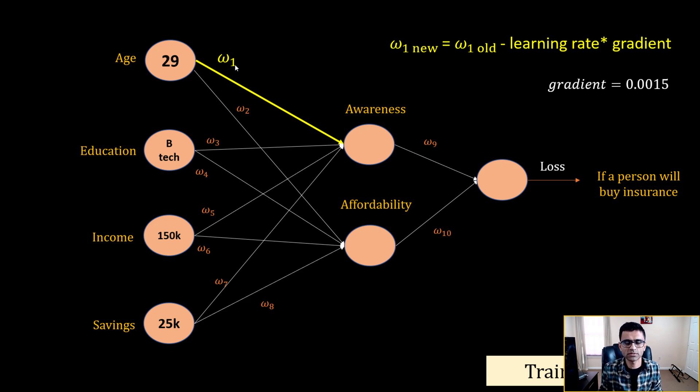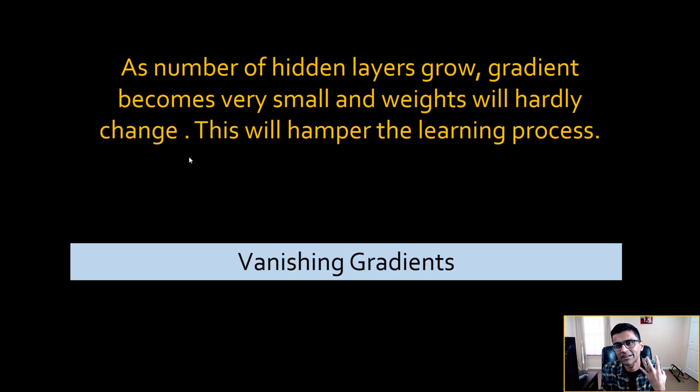So during your training process now your weights, especially the weights in the earlier layers, are changing by a very small amount and that affects your learning process. This concept is called vanishing gradients. When you have a big neural network, in the earlier layers the gradient effect will be very small. That's why it's called vanishing gradient. It's not good for neural network training because your weights are hardly changing and you're not really learning anything.